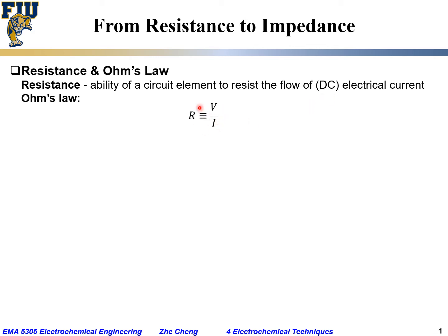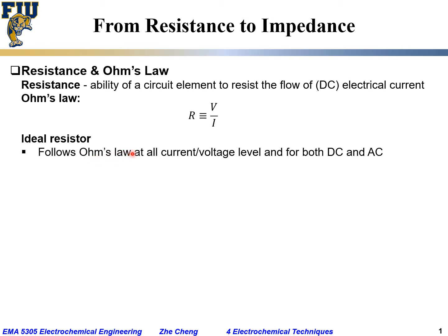Voltage over current gives us the resistance — that is Ohm's law. For a so-called ideal resistor, a resistor that behaves perfectly will follow Ohm's law at all current and voltage levels, from very low to very high current density, and from very low to very high DC voltage. It actually follows Ohm's law for both DC and AC (alternating current), and an ideal resistor is independent of AC frequency — this R value, this ratio, is independent of the frequency.